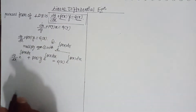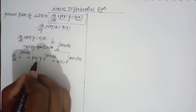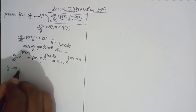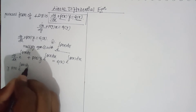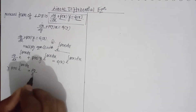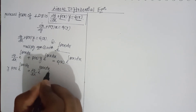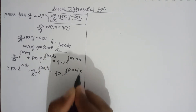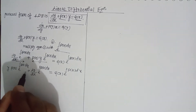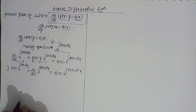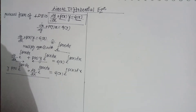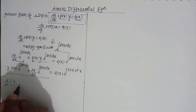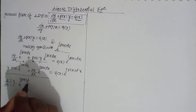Now see, this left-hand side — this term and this term — can be recognized. y into P(x)·e^∫P(x)dx plus dy/dx·e^∫P(x)dx. This is exactly d/dx of [y·e^∫P(x)dx], and the right-hand side remains as it is.